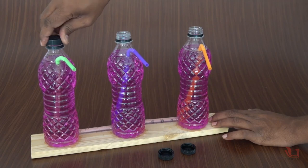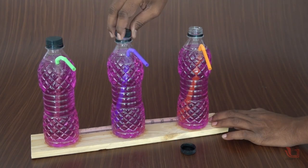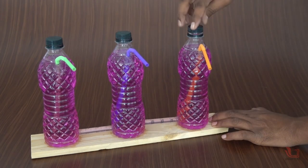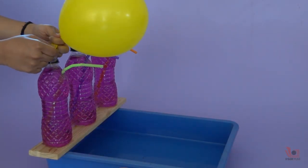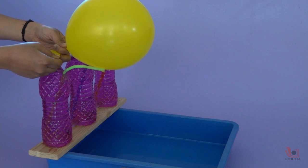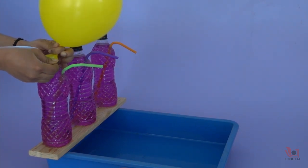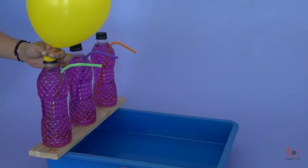Fix the caps on the bottles. Place the bottles in the tray so that we can collect the water in it. Again, inflate the balloon and fix it to one of the bottles.